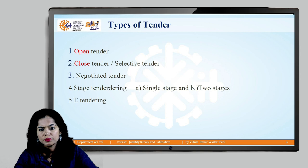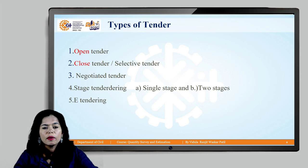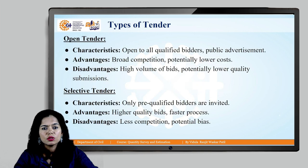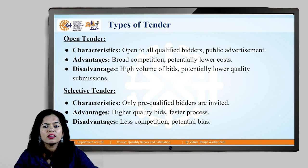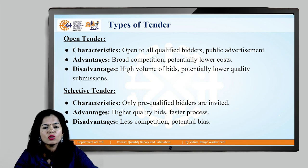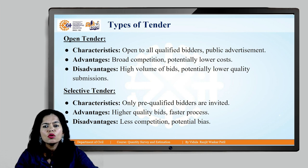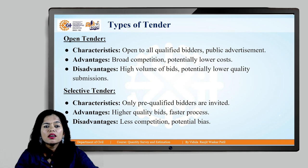Now, types of tender. This is an important part — choosing to whom we give this proposal. The first type is open tender. Here we give the tender document without any criteria restricting who can receive it. It is widely distributed — sometimes as a national contract, state contract, or international contract — with no binding obligation on who can take this proposal. This type is called open tender.